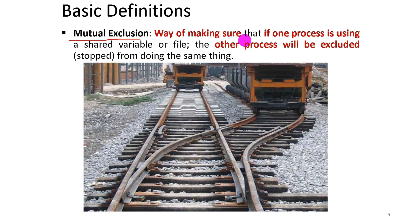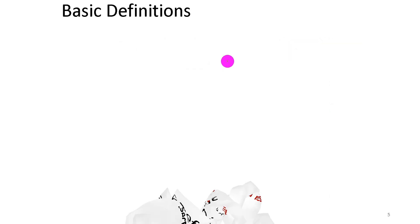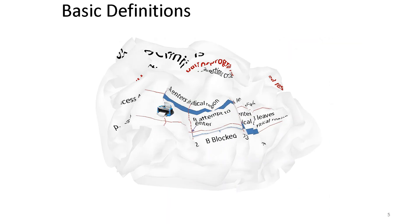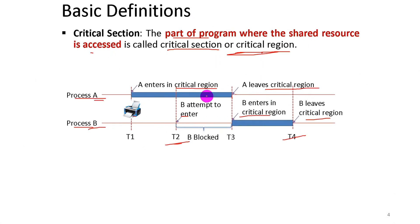Mutual exclusion is the way of making sure that if one process is using a shared resource or a file, the other process will be excluded from doing the same thing at the same time.